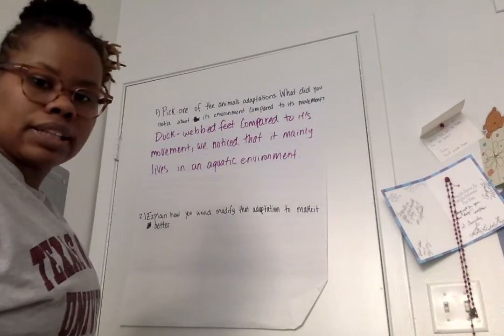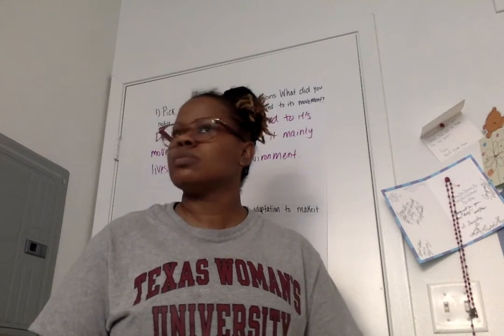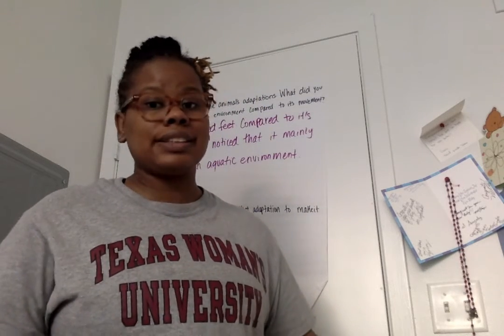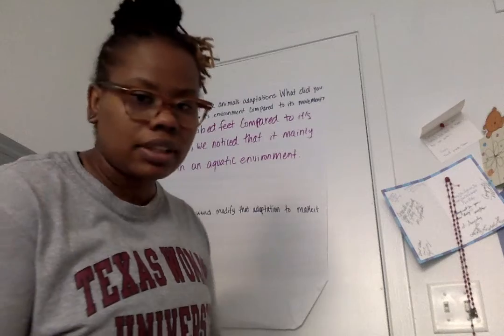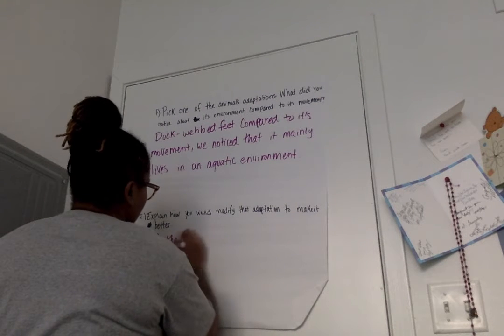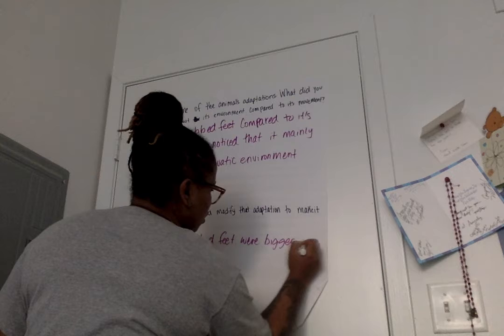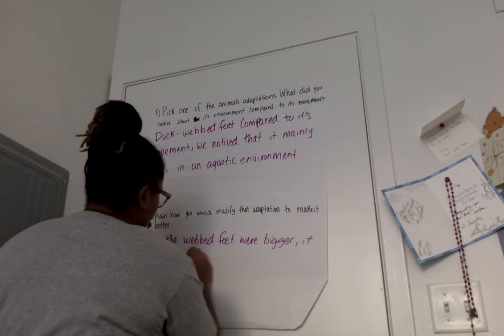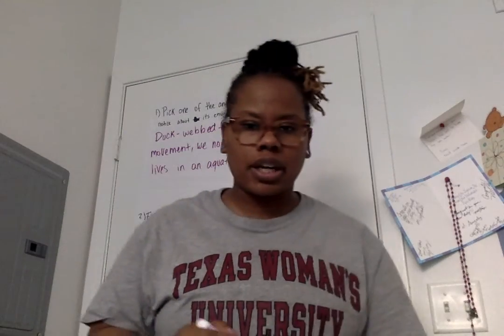Number two: explain how you would modify that adaptation to make it better — specifically talking about its feet. We could say the size. The bigger the fins, the faster it could probably go. So if the webbed feet were bigger, it would be able to swim faster. There's definitely no right or wrong answer to that.